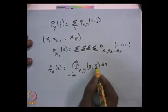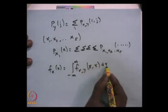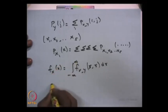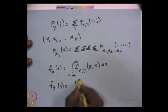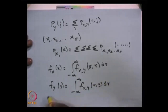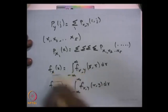By integrating the joint probability density function with respect to the other random variable, you get the probability density function for a single variable. For instance, integrating with respect to r gives the marginal distribution of Y, and integrating with respect to s gives the marginal distribution of X.